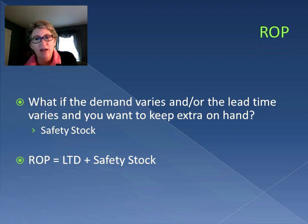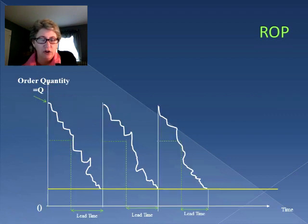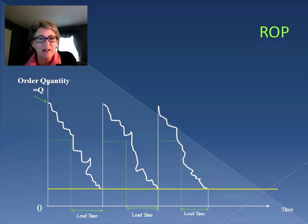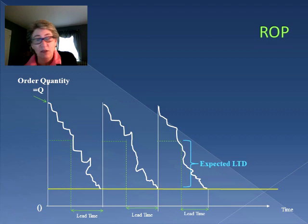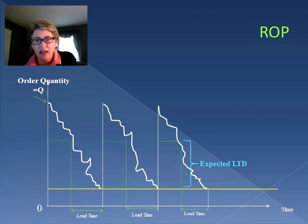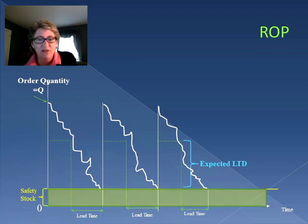If we look at that graphically, the chart looks a little bit different. Instead of a nice, smooth demand, it wiggles and varies, because we're not exactly sure how much is going to be used at any given point. We still have a lead time, so we have an expected lead time demand — how much we think we're going to use during the period from placing the order to it being received. But notice we don't let it go all the way down to zero. Instead, we have that yellow line there, and that's known as the safety stock.